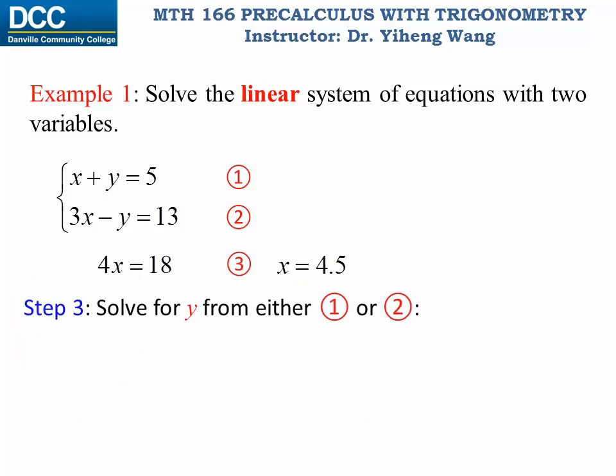And then for step three, we can choose either equation one or two to solve for y. Let's choose equation one. Since x equals 4.5, from equation one y equals 5 minus x, therefore y equals 0.5. Therefore the solution to this system is x equals 4.5 and at the same time y equals 0.5.